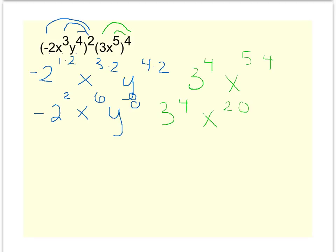Now I have to combine all the like terms that I have. In one big multiplication problem like this, let's see. I've got negative 2 squared, which is a negative 4, x to the 6th, y to the 8th,